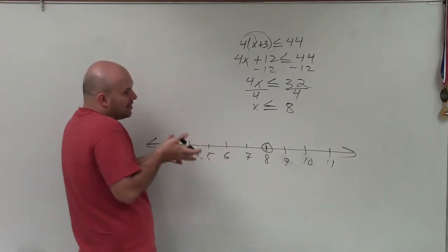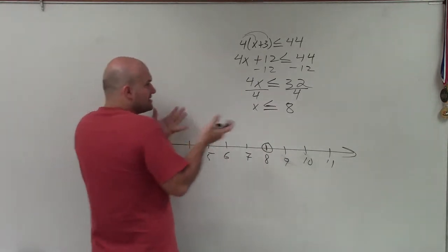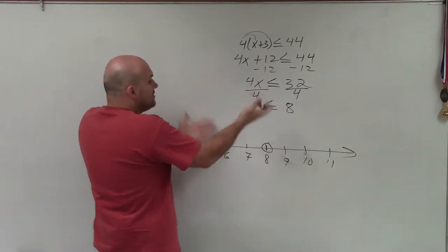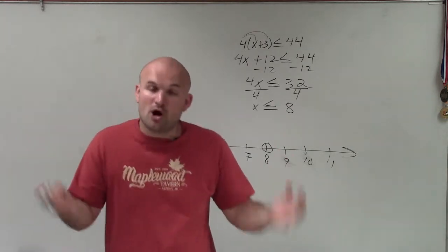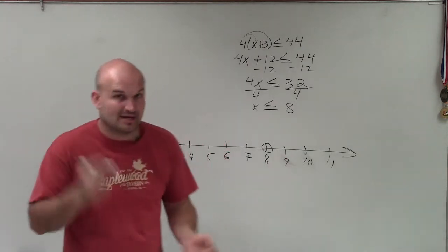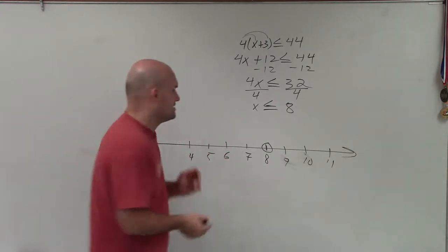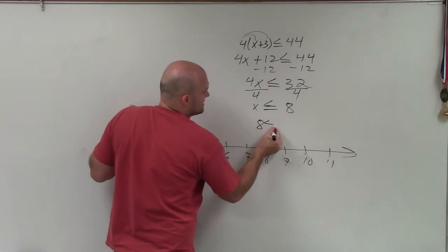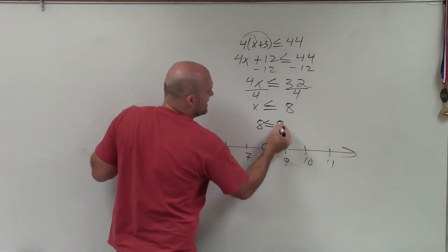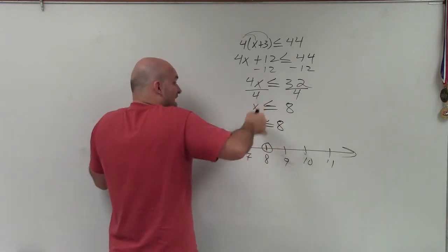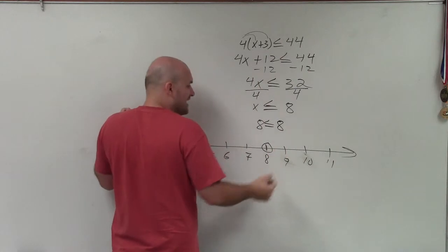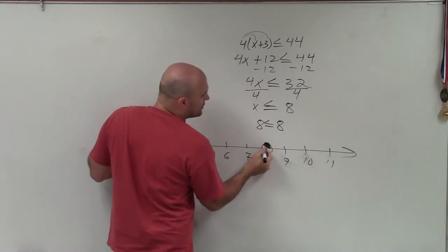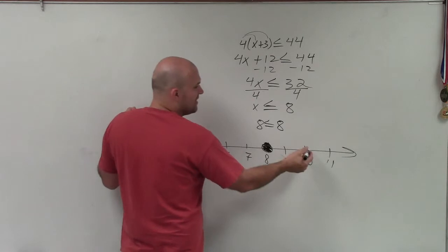I like to write an open circle there because I like to test all of my values. Some of you might say, oh, less than or equal to means it's part of the solution, so you shade it in — which is correct. But why do you shade it in? Because 8 is less than or equal to 8. Plug it into the equation: is 8 less than or equal to 8? Yes, it is. So it's part of the graph, and therefore we shade it in.